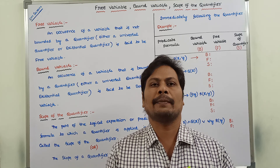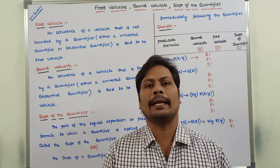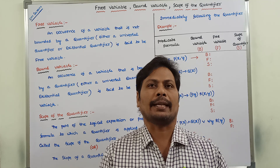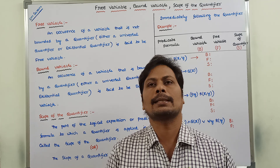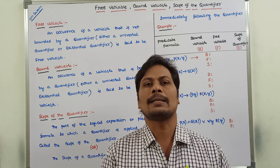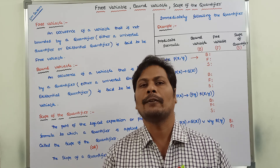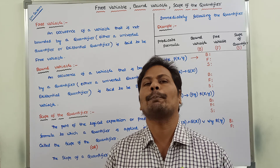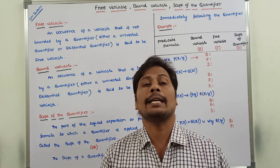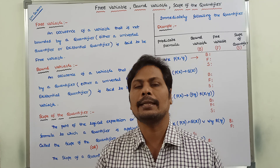Hi friends, today I am giving a lecture on free variable, bound variable, and scope of a quantifier in predicate logic. These are some of the most important topics in predicate logic in discrete mathematics. In the previous video, we already discussed what a quantifier is, the types of quantifiers, and how we represent quantified statements in symbolic form. Now, in this video, we will discuss what is free variable, what is bound variable, and what is the scope of a quantifier.